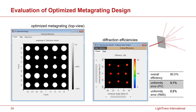Looking at the finally optimized meta-grating, each pillar remains at its original position but with diameters slightly changed. The overall efficiency remains at about 80%, while the uniformity error peak-to-valley value has been reduced from over 30% to about 3.1%. In the graph showing the diffraction efficiencies in Cartesian angle space, you can also see very clearly that all nine spots are evenly distributed in the far field. All these analyses and design procedures are done within one platform — VirtualLab Fusion.